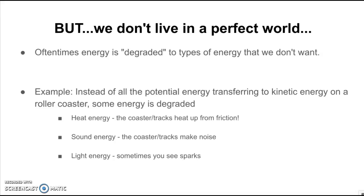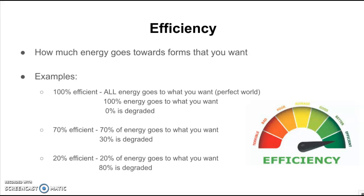Efficiency captures this idea: how much of that energy goes to the form that you actually want? Something that is 100% efficient means that all of the energy goes towards exactly what you want. It's essentially the perfect world — 100% of the energy goes towards what you want, and 0% is degraded.